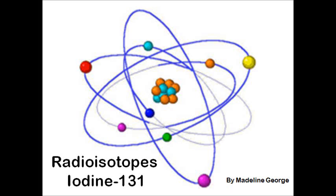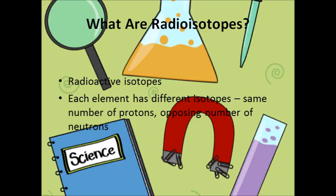Welcome to this video on radioisotopes, in particular the radioisotope iodine-131. Radioisotopes are radioactive isotopes. Each element has different isotopes, each of which have the same number of protons but differing numbers of neutrons. An easy way to remember this is as an unbalanced amount of protons and neutrons contained in an atom.